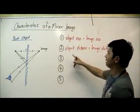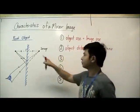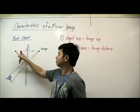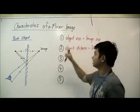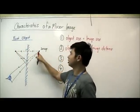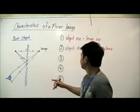Let me repeat again. The object distance is the distance between the object to the mirror, and the image distance is the distance between the image to the mirror.